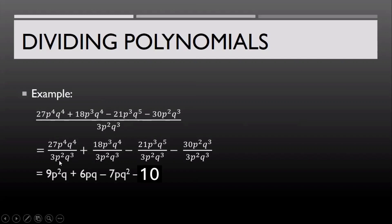So 27 divided by 3 gives us 9, and applying the law of exponents on the variables gives us p squared q. Then 18 divided by 3 gives us 6; applying the law of exponents gives us pq. Then negative 21 divided by 3 gives us negative 7, and applying the law of exponents gives us pq squared. And negative 30 divided by 3 gives us negative 10. So the final answer is 9p squared q plus 6pq minus 7pq squared minus 10.